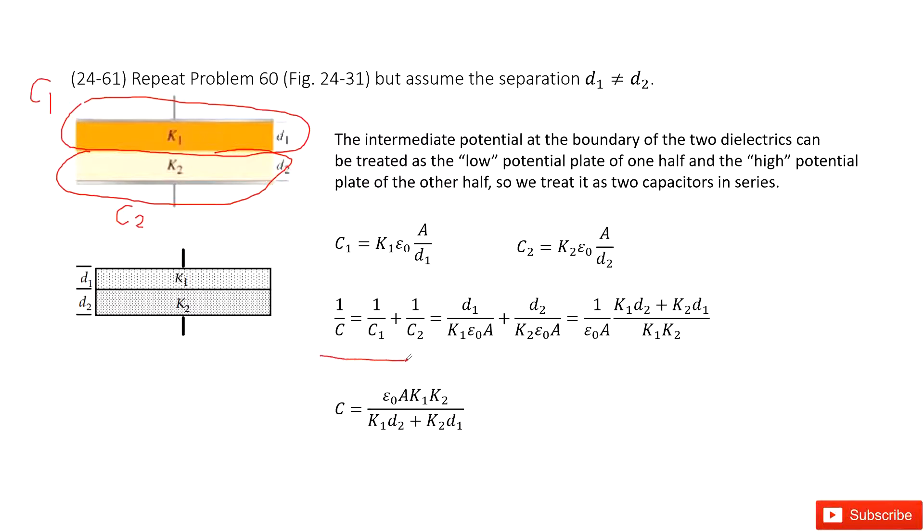We can consider these rules to find the equivalent capacitance. Now we write down the capacitance for c1. As we know the dielectric is k1, so we write it there. The distance is d1. Similarly, we can write the capacitance for c2 there. Now we can input c1 and c2 inside and get the function for c.